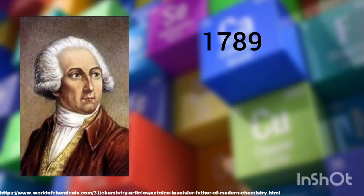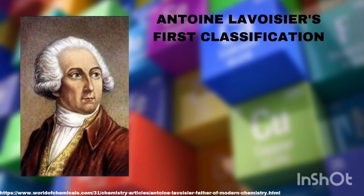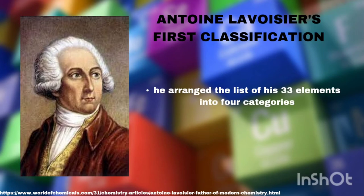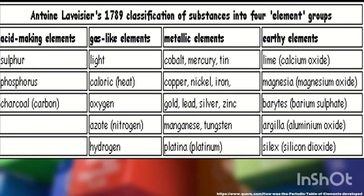Let us get to know the scientists who contributed to the development of the periodic table. In 1789, Antoine Lavoisier, a French physicist-chemist, published a book that contained the classification of elements based on their similar properties. He arranged his list of 33 elements into four categories: acid-making elements, gas-like elements, metallic elements, and earthy elements. Unfortunately, Lavoisier's work did not progress until his death.